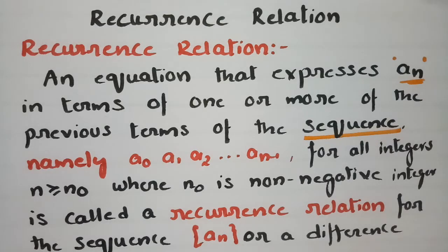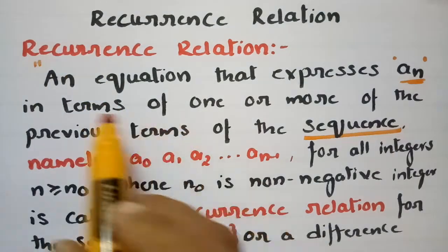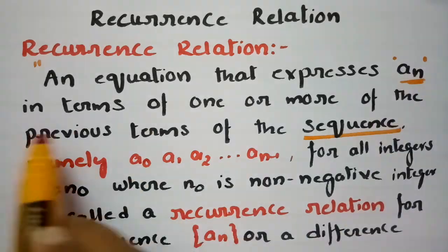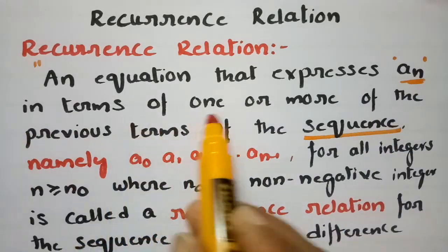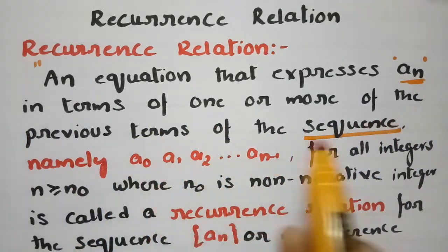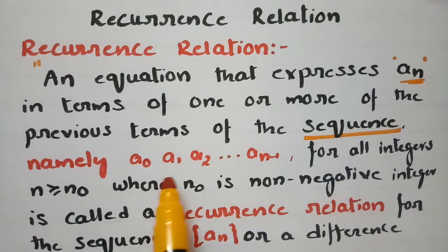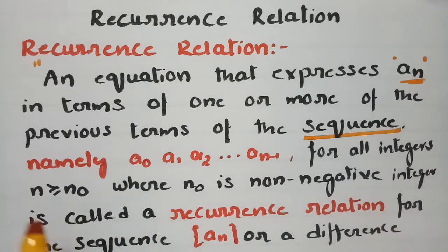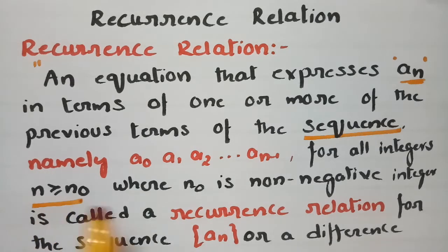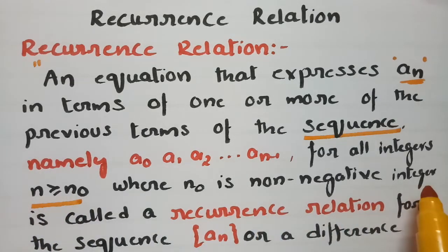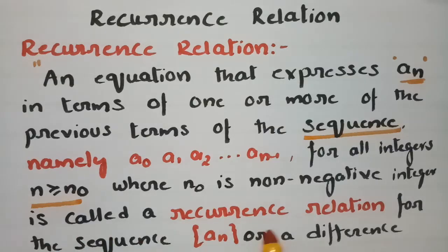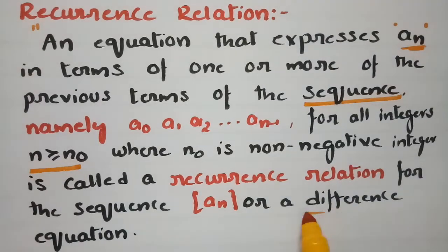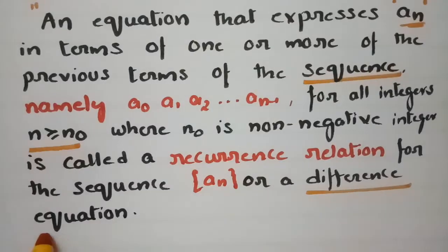According to the definition, an equation that expresses Aₙ in terms of one or more of the previous terms of the sequence — namely A0, A1, A2, and so on — for all integers where n is greater than or equal to n0, where n0 is a non-negative integer, is called a recurrence relation for the sequence Aₙ, or the difference equation.